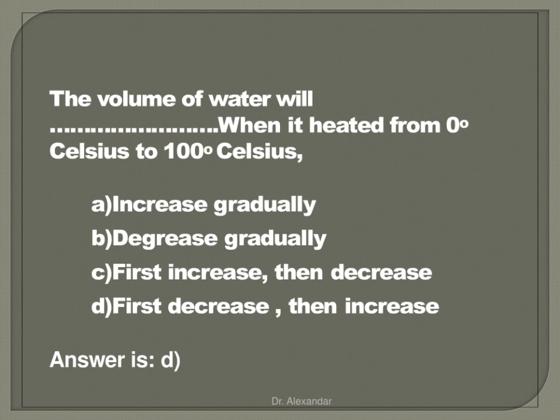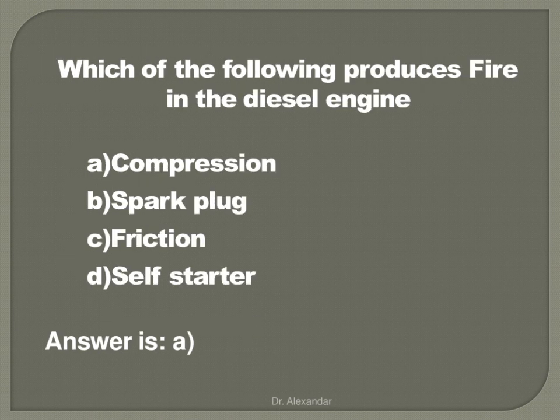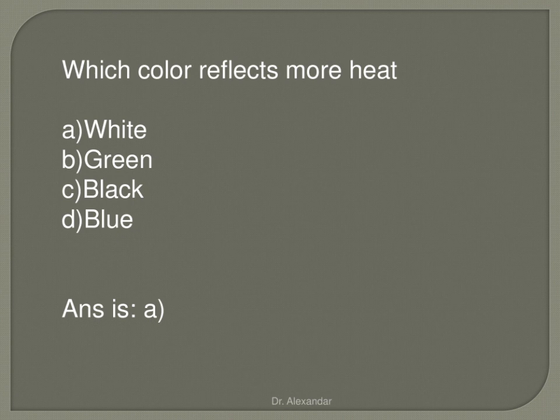Which of the following is the best material for electrical conduction? That is silver. Which of the following produces fire in the diesel engine? That is compression. Which color reflects more heat? White color reflects heat in the form of light.